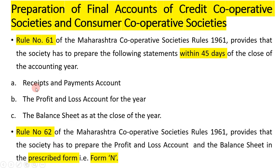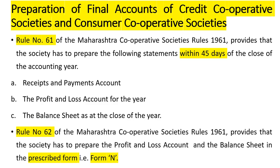The financial statements to be prepared are: first, receipts and payment account; second, profit and loss account for the year — you can also call it income and expenditure account; and last, the balance sheet as at the close of the year. The credit cooperative society and consumer cooperative society have to prepare all three of these financial statements.